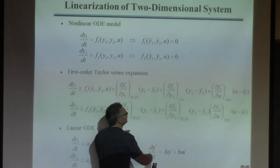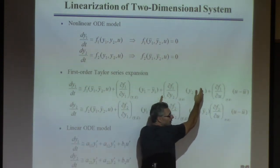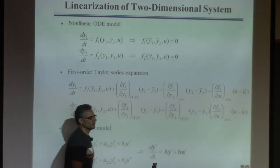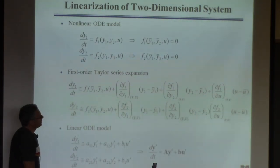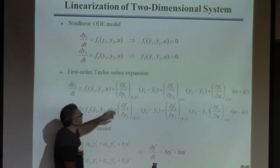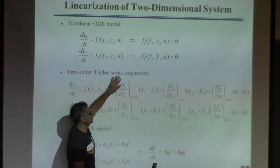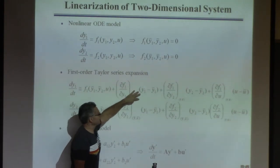The first input y1, the one involving the first output, second output y2, and one involving the input u. What do those derivatives look like? They look like this. Take the derivative of the function, the right-hand side, with respect to y1. That's a function. Evaluate that at the steady state.